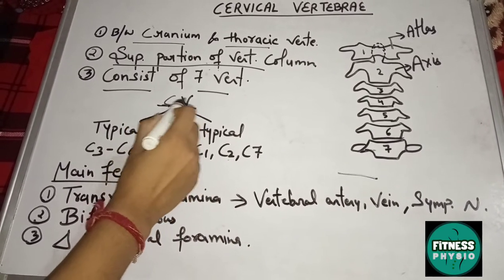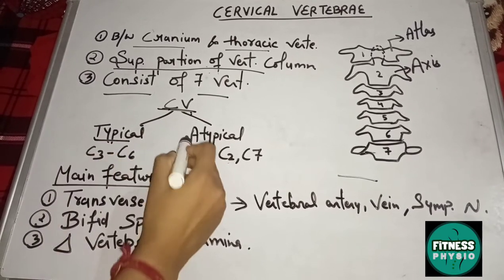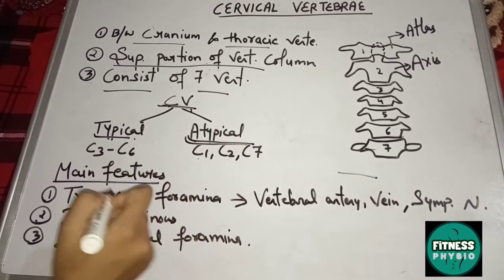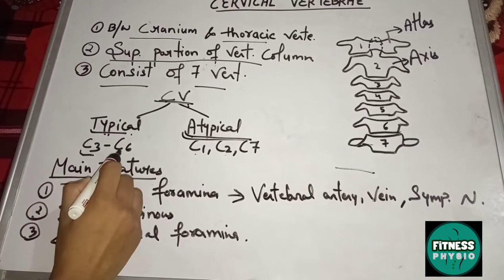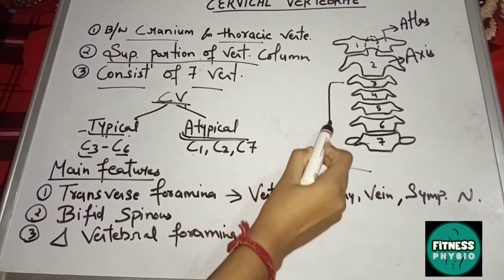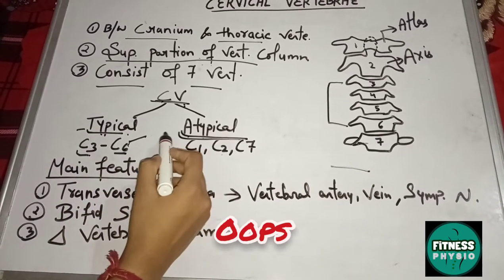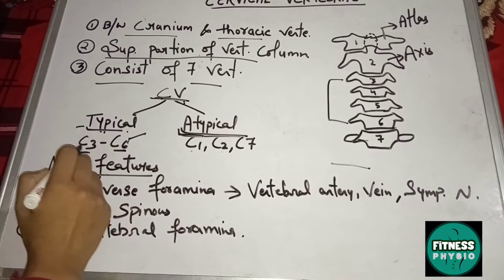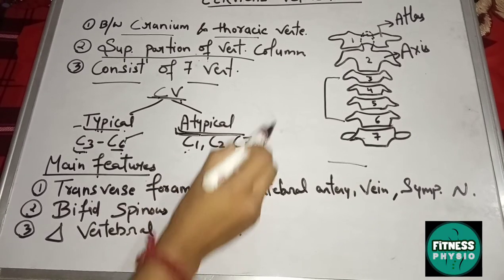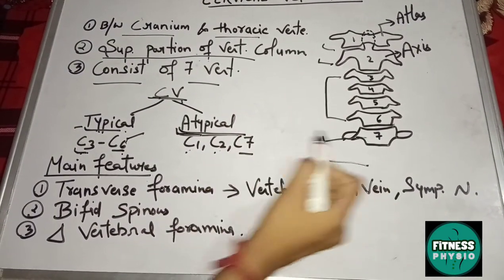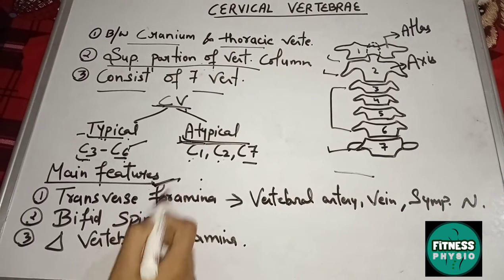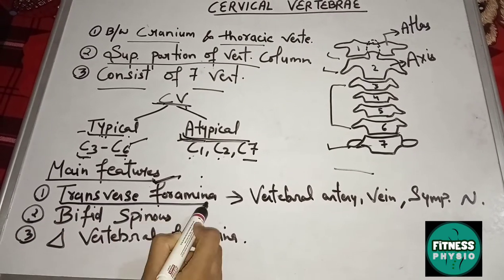Cervical vertebra, CV, is divided into two types: typical and atypical. Cervical vertebrae ranging from C3 to C6 are typical cervical vertebrae, while C1, C2, and C7 are atypical cervical vertebrae. A main feature of all cervical vertebrae is that they have a transverse foramen.